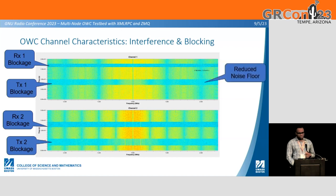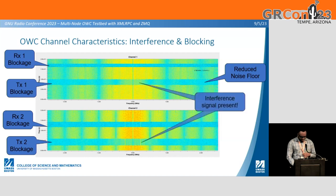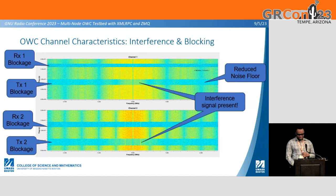Another thing to point out is the reduced noise floor — because once TX1 drops, we still have a little bit of interference from the DC power of the LED. In both TX1 and TX2 blockage, the interference signal is still present.